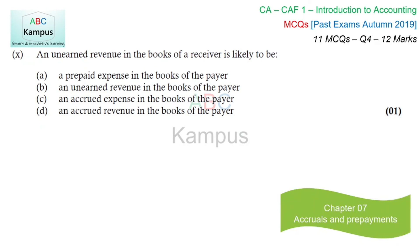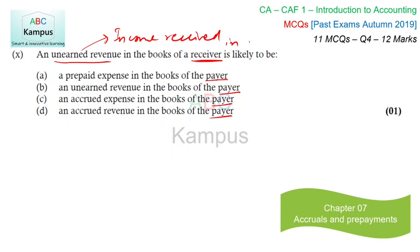Unearned revenue in the books of the receiver — the discussion is about the payer. Unearned revenue means income received in advance. What is income received in advance for the receiver is expense paid in advance for the other party — which is called prepaid expense. So it will be a prepaid expense of the payer. Option A would be correct.